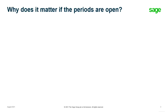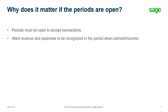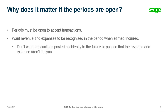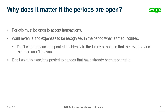So why does it matter if the periods are open? Periods must be open to accept transactions. We want revenue and expenses to be recognized in the period when the revenue was earned and the expenses were incurred. We don't want transactions posted accidentally to the future or past so that the revenue and expenses aren't in sync anymore. We don't want transactions posted to periods that have already been reported to management, investors, and auditors.